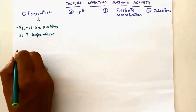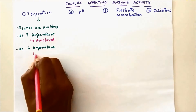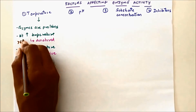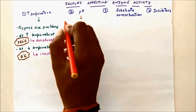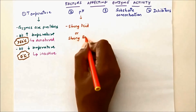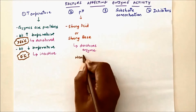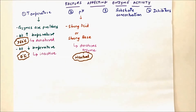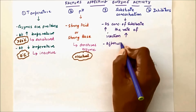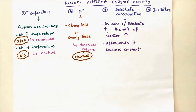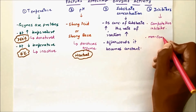Enzymes are proteins in nature. At high temperature the enzyme gets denatured — more than 60°C causes denaturation, while 0°C makes enzymes inactive. Strong acid or strong base will decrease enzyme activity or denature the enzyme. At neutral pH, enzyme activity is maximum. As substrate concentration increases, the rate of reaction increases, but afterward it becomes constant because no enzyme is available for further substrate binding.